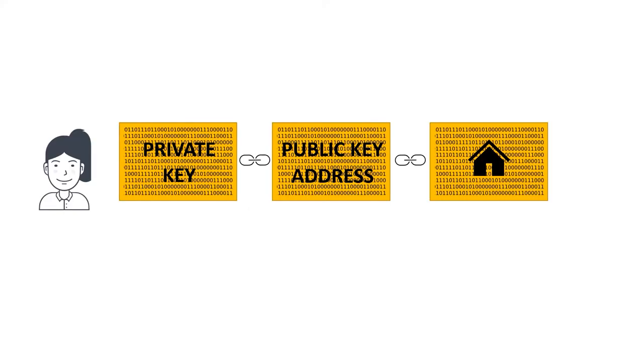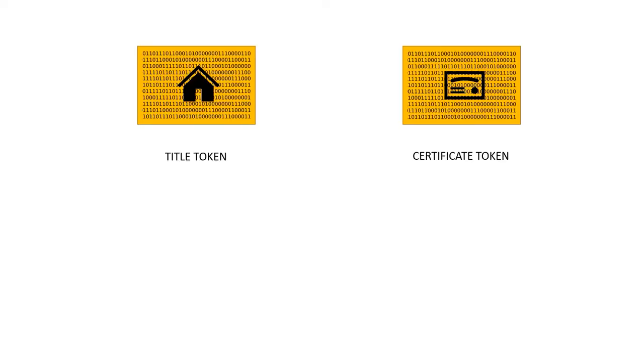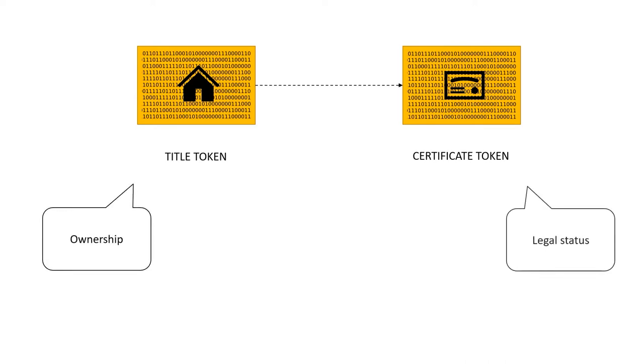But what if the private key becomes inaccessible — lost, stolen, or the owner dies? Or what if the title needs some legal update? There is another token to address this: the record that I call a certificate token. The properly designed title token refers to the certificate token, which doesn't represent the ownership but only its legal status. This record validates the title token. The certification records are managed by a public body responsible for the registry, such as a land registry office. So when any user on the blockchain finds a title token, it contains the reference to the certificate token which states if this title is valid or not.